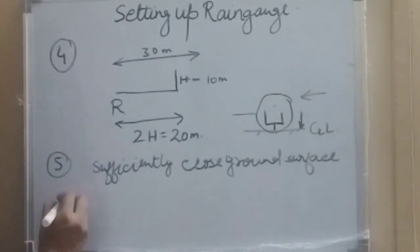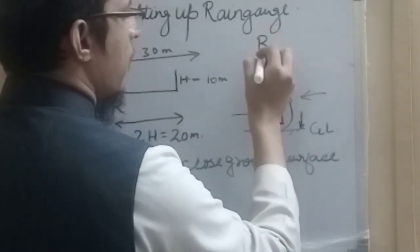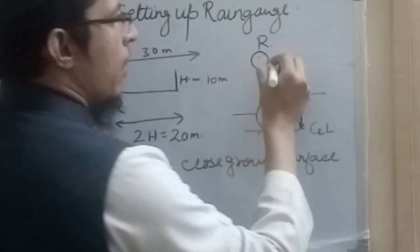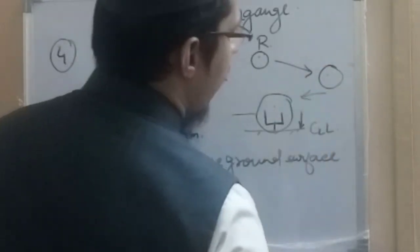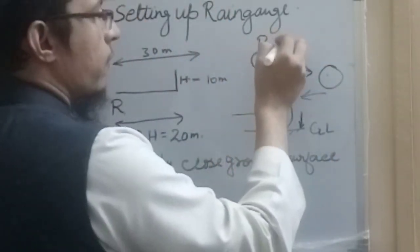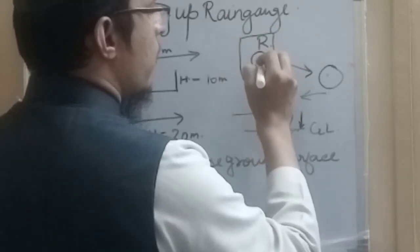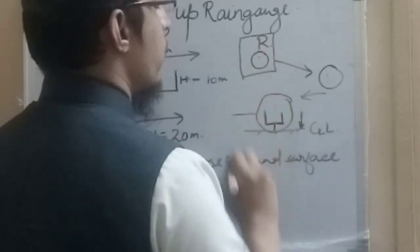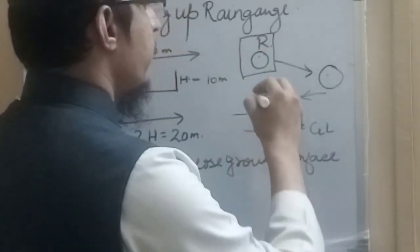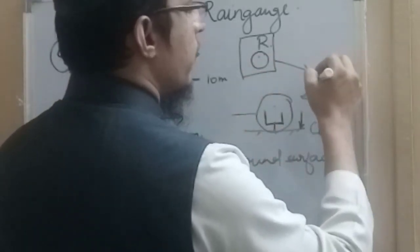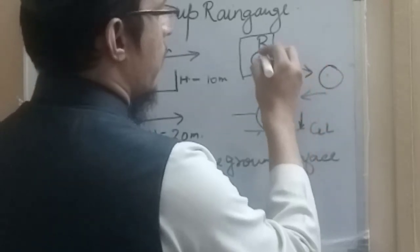Sixth point is that if we are supposed to shift the rain gauge from, suppose here was the actual location, due to some reason we are about to shift it here, then in that case we should take the record of the rain gauge data here. Climatic condition, what were the climatic conditions here, what was the geographic conditions here, what was the slope. All these things should be noted before shifting the rain gauge to the new location, because we may have some different reading at this location, so we can correlate these readings.